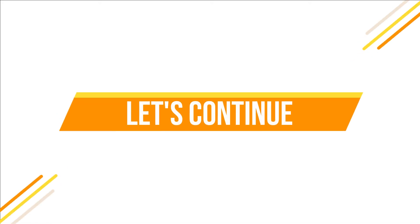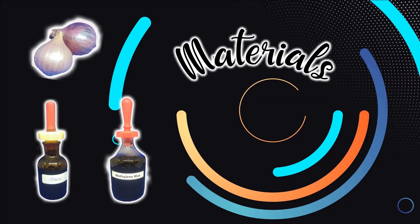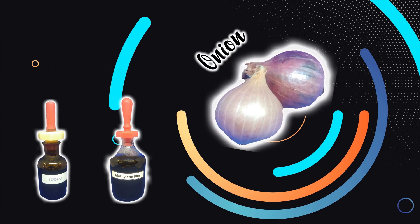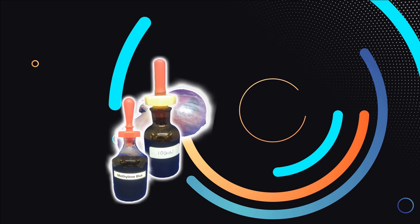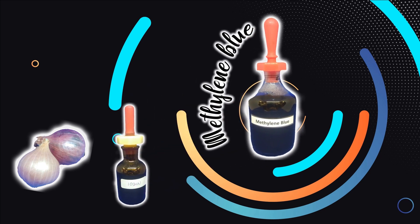So let's continue with our experiment. First of all, let's start with the materials and apparatus needed. There are 3 materials needed in total. They are onion, iodine, and methylene blue.